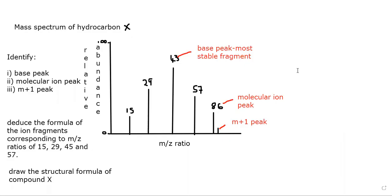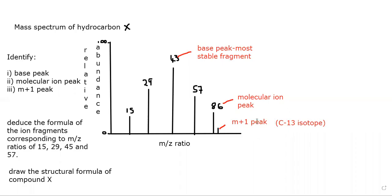So these are the three peaks you can be asked to identify from the chart: base peak, molecular ion peak, and the M+1 peak. M+1 is not on every mass spectrum because it represents the carbon-13 isotope. Not every mass spectrum will have an M+1 peak.